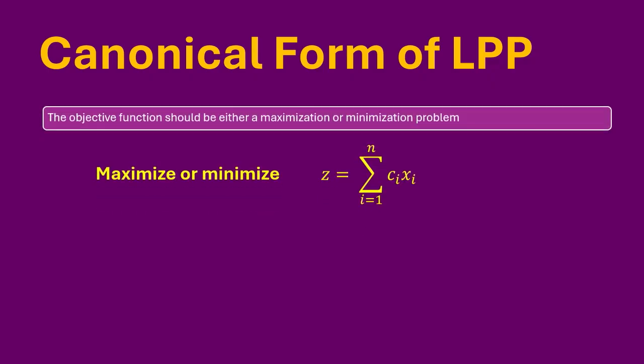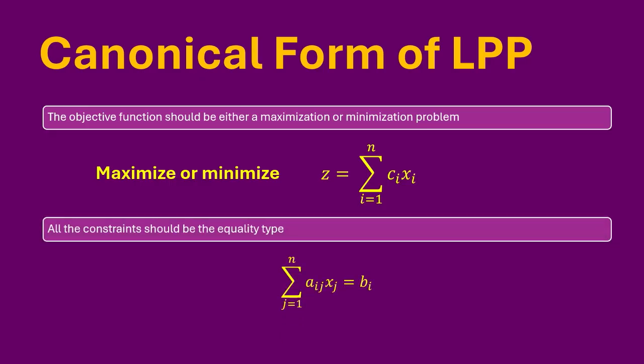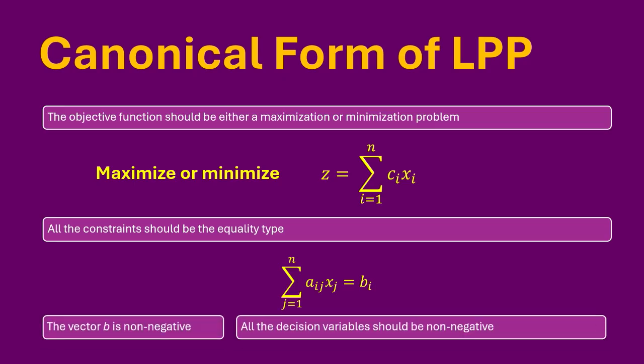So what is the canonical form of LPP? The first four conditions required to be true for an LPP in its canonical form are the same as we saw in the standard form. That is, the objective function should be either a maximization or minimization problem, all the constraints should be the equality type, the right-hand side vector b is non-negative, and all the decision variables should be greater than or equal to zero.